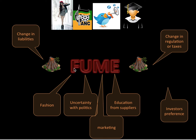Then there's the rest of the FUME mnemonic. F is for fashion — what is fashionable to invest in? This is why we have stock market bubbles: it becomes fashionable to invest in the stock market, everybody wants in, and that pushes the price above what it should be. Something that can decrease markets is uncertainty around politics — if the government says they're going to take all the land, that scares everybody and property prices start going down.